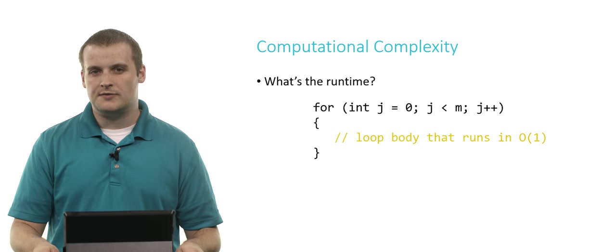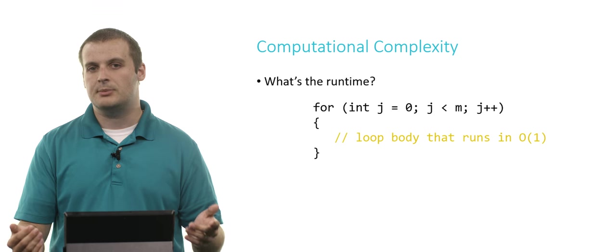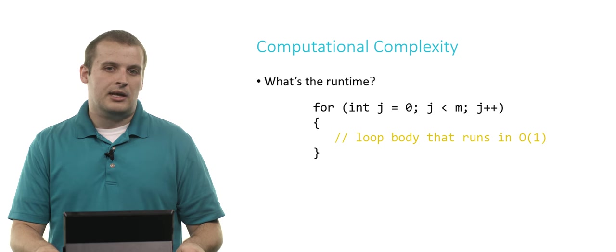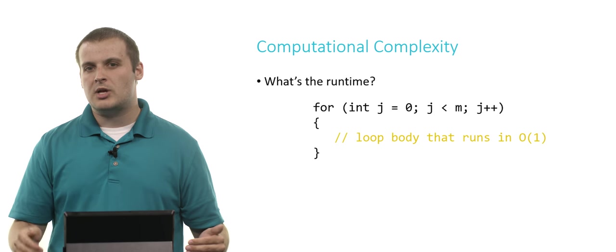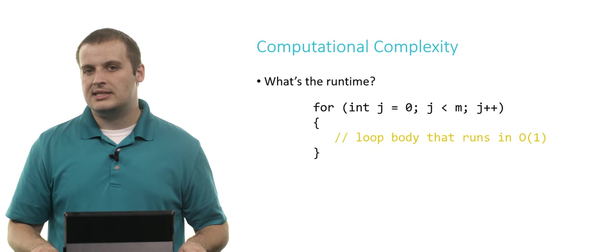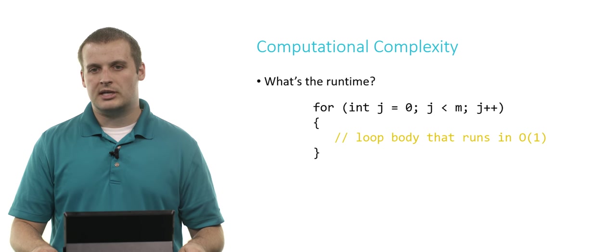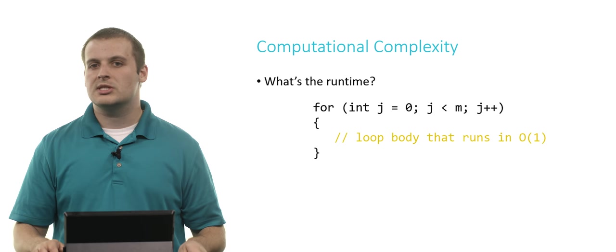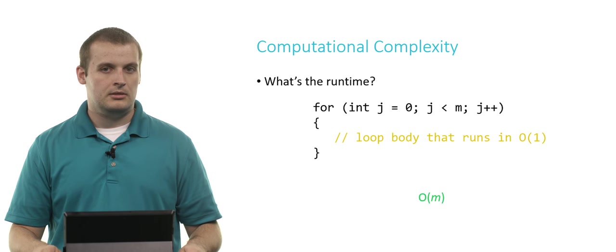A couple quick questions for you. What's the run time, what's the worst case run time of this particular snippet of code? So I have a for loop here that runs from j equals 0 all the way up to m. And what I'm saying here is that the body of the loop runs in constant time. So using the terminology that we've already talked about, what would be the worst case run time of this algorithm? Take a second. The inner part of the loop runs in constant time. And the outer part of the loop is going to run m times. So what's the worst case run time here? Did you guess big O of m? You'd be right.